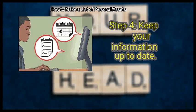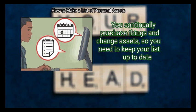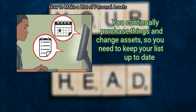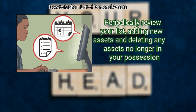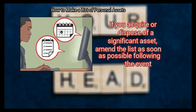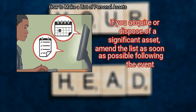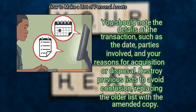Finally, keep your information up to date. Just because you made one list, your work is not over. You continually purchase things and change assets, so you need to keep your list current. Periodically review your list, adding new assets and deleting any assets no longer in your possession. If you acquire or dispose of a significant asset, amend the list as soon as possible. You should note the details of the transaction, such as the date, parties involved, and your reasons for acquisition or disposal. Destroy previous lists to avoid confusion, replacing the older list with the amended copy.